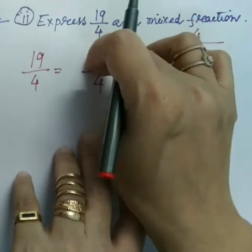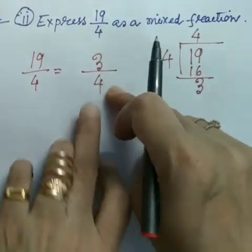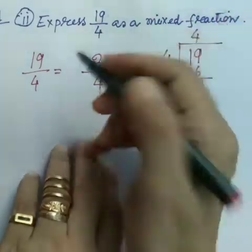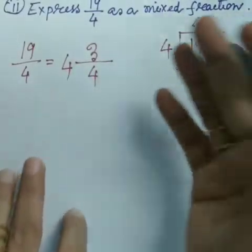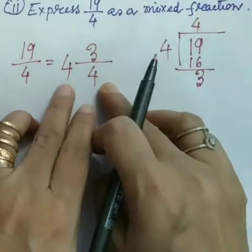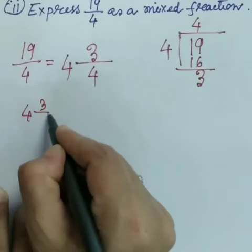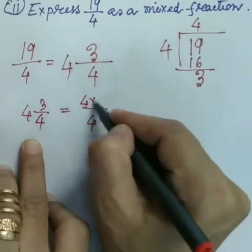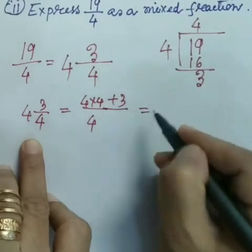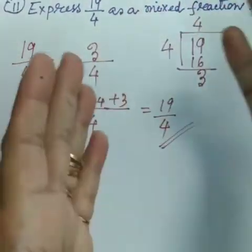So the remainder 3 is our numerator, 4 is our denominator, and the quotient 4 is our whole number part. Therefore 19/4 = 4 and 3/4. We can verify this by converting back: 4 and 3/4 = (4 × 4 + 3)/4 = (16 + 3)/4 = 19/4. Checking is done and our answer is correct.